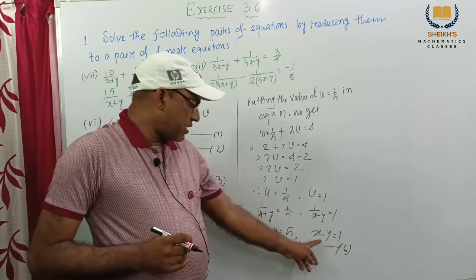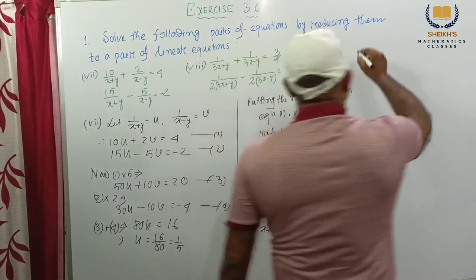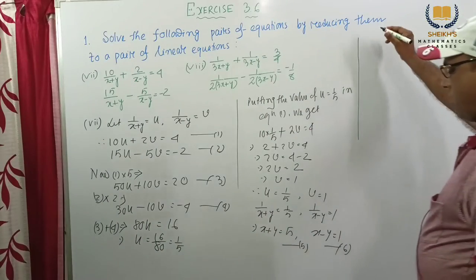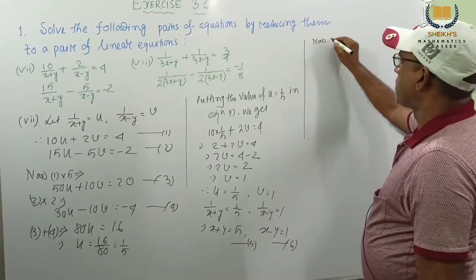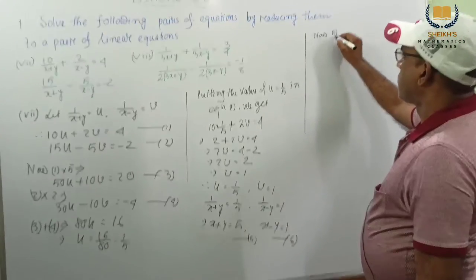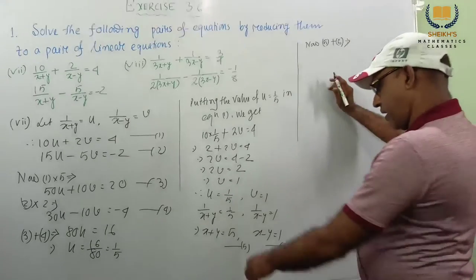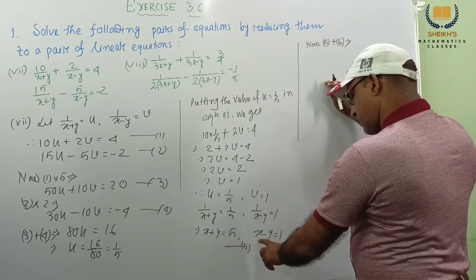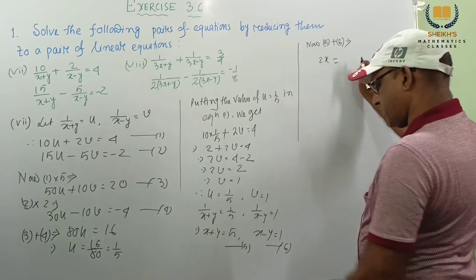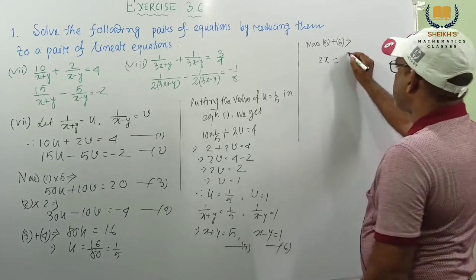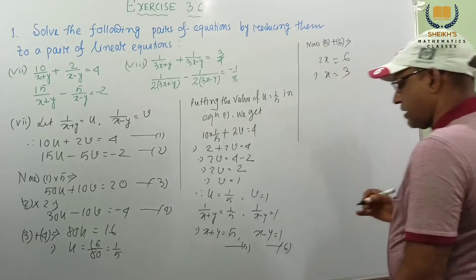Now 5 plus 6 implies: x plus x is 2x, y and y cancel. 5 plus 1 is 6. So x equal to 3. Putting the value of x equal to 3 in equation 5: 3 plus y equal to 5, y equal to 5 minus 3, and y equal to 2. Therefore we get x equal to 3, y equal to 2. This is our answer. Very easy.